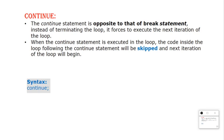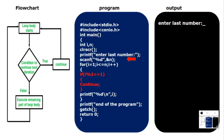The syntax is: continue semicolon. Let's see the program. I have highlighted the if condition in red so you can identify it easily. Looking at the flowchart — until the condition is false, the loop will continue and the next statement will print. When the condition is true, continue will not allow the printf to execute; instead, it will move the cursor back to the for loop.